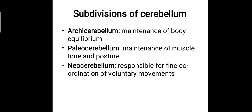The further subdivisions of the cerebellum divide it into the archicerebellum, paleocerebellum, and neocerebellum. The archicerebellum is the oldest part formed during embryological development, so it has that name — the term 'archi' refers to the old one. The archicerebellum has the function of maintenance of body equilibrium, the paleocerebellum maintains muscle tone and posture, and the neocerebellum is responsible for the fine coordination of voluntary movements.